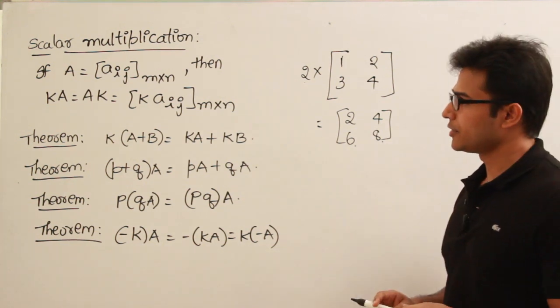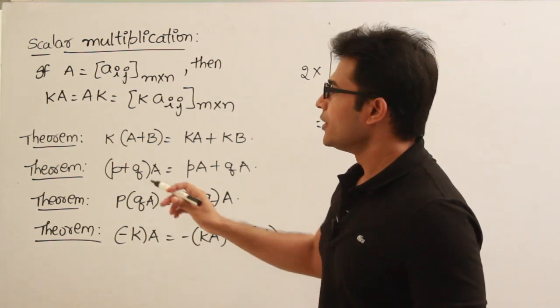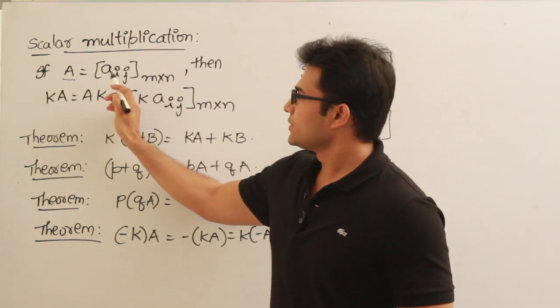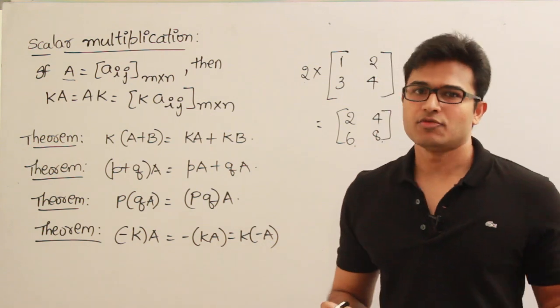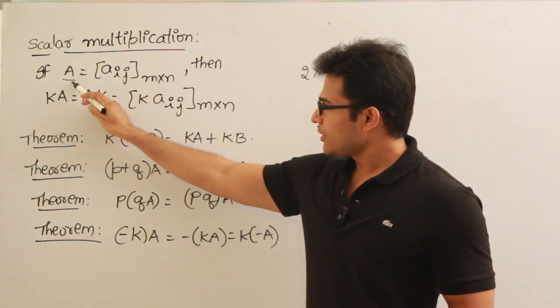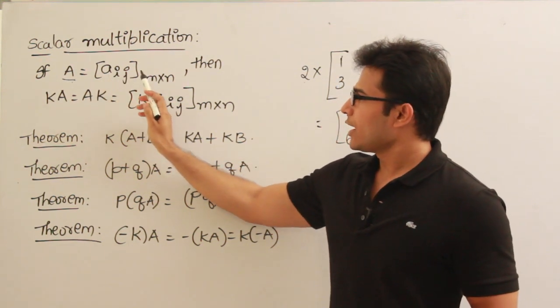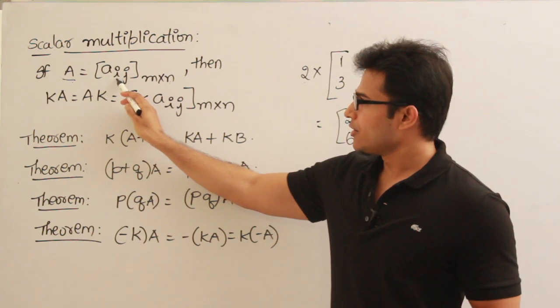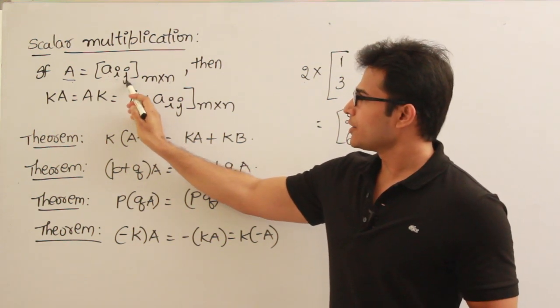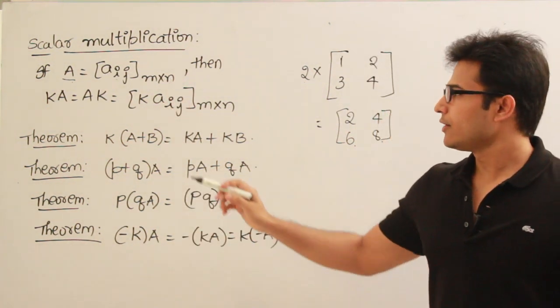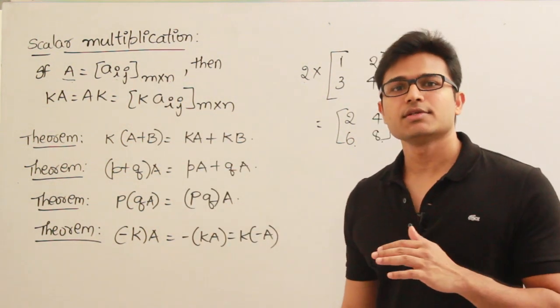So there are some properties on scalar multiplication. The definition is like this. If A is a matrix, this is the formal representation which means we are saying that capital A has element small a_ij and whose size is m by n. If you substitute in place of i, j all the possible numbers between 1 and m and 1 and n, then you get the entire matrix.